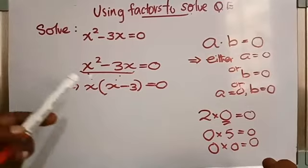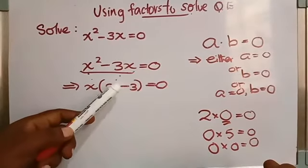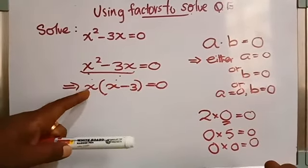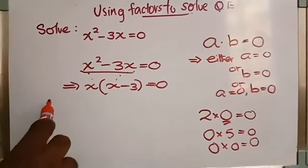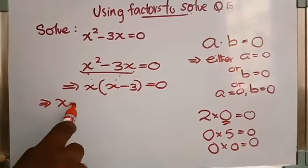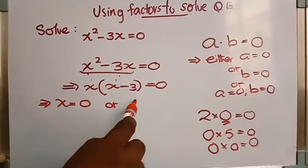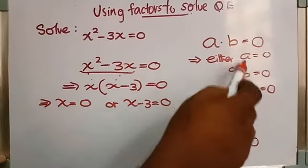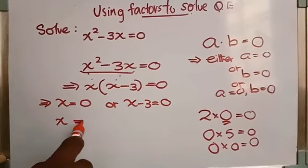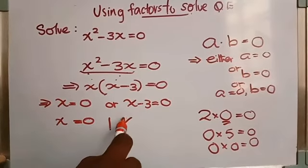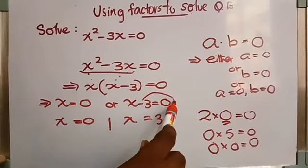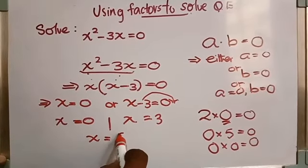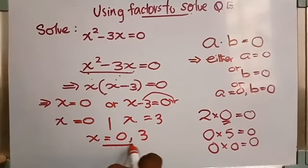So when you apply that concept here, x is in the place of a and x minus 3 is in the place of b. This is also a product of two terms: x into (x minus 3) equals 0. So we can say either x equals 0 or x minus 3 equals 0. When you take minus 3 to the right side, it becomes plus 3. So we get two values: x is equal to 0 or x is equal to 3.